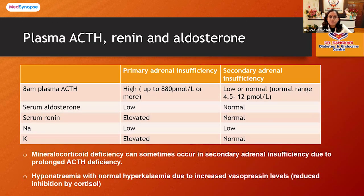This diagram shows the difference between primary and secondary adrenal insufficiency. In primary adrenal insufficiency, ACTH is elevated — up to 880 picomoles per liter — aldosterone is low, and renin is high. In secondary causes, ACTH is low with normal aldosterone and renin levels. Mineralocorticoid deficiency can sometimes also occur in secondary adrenal insufficiency due to prolonged ACTH deficiency.